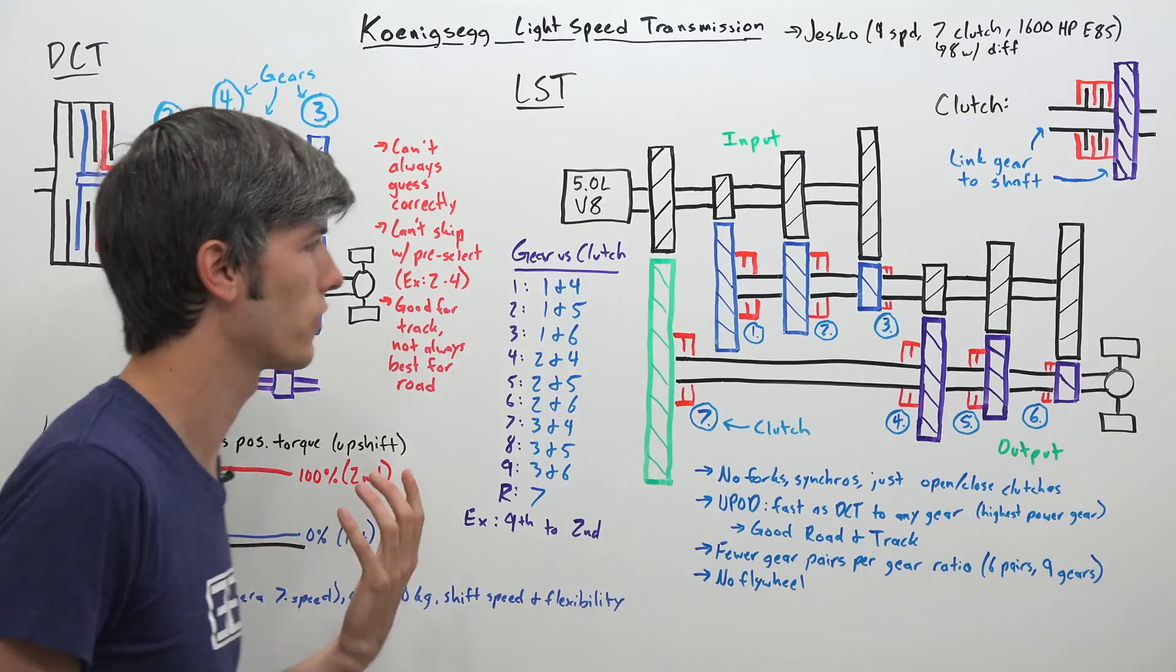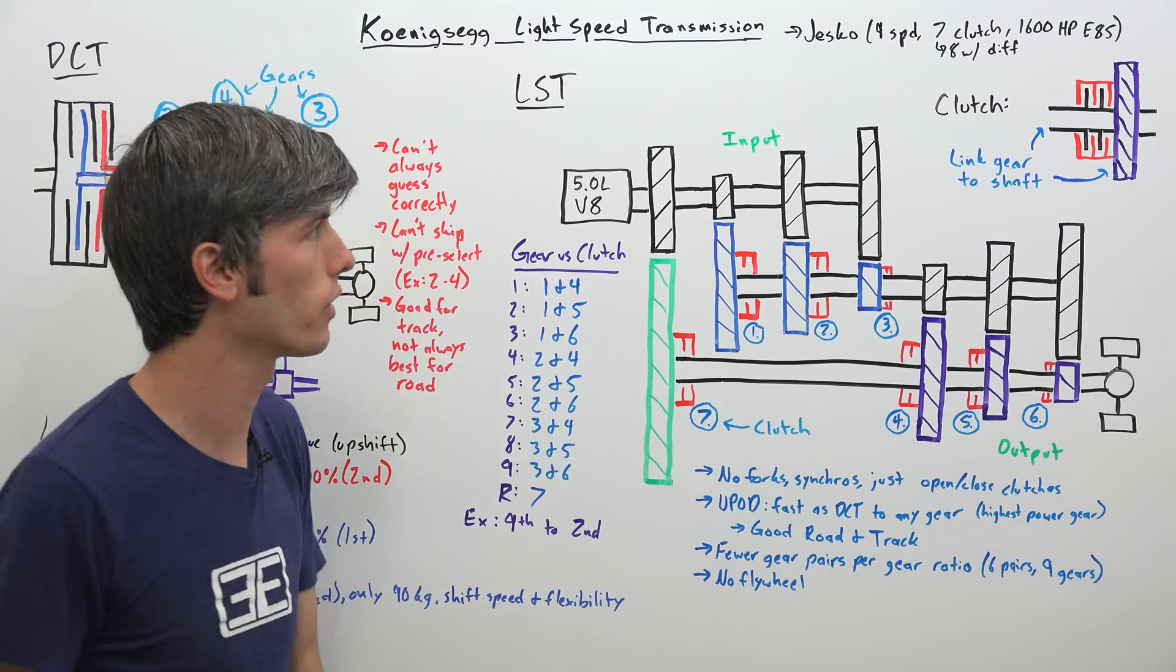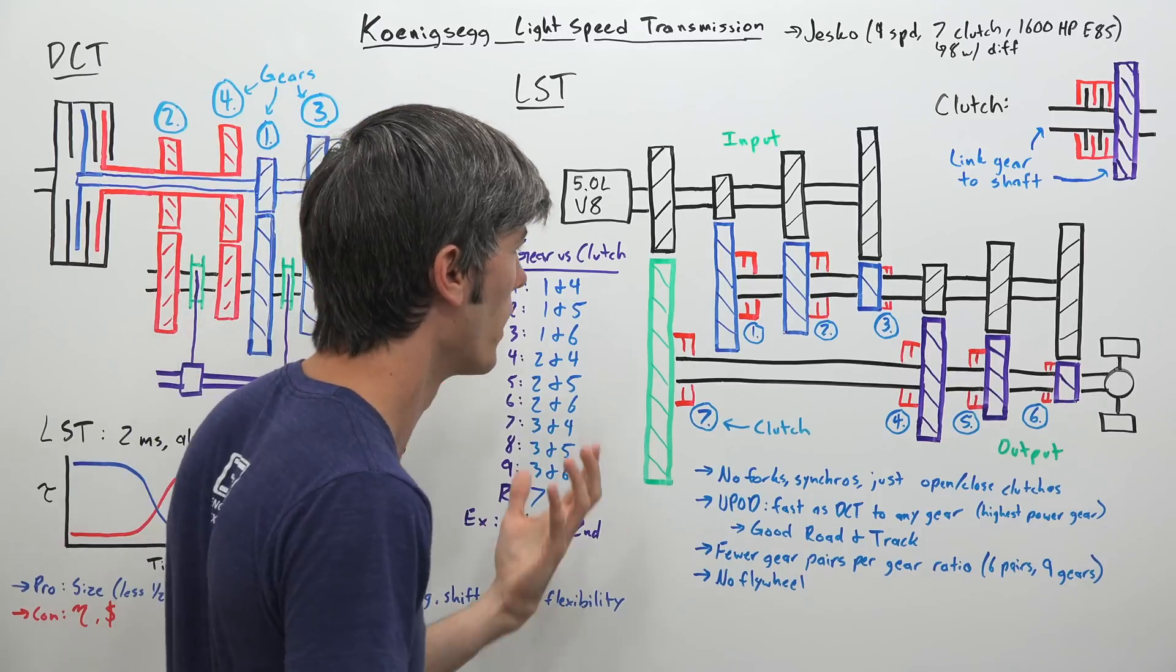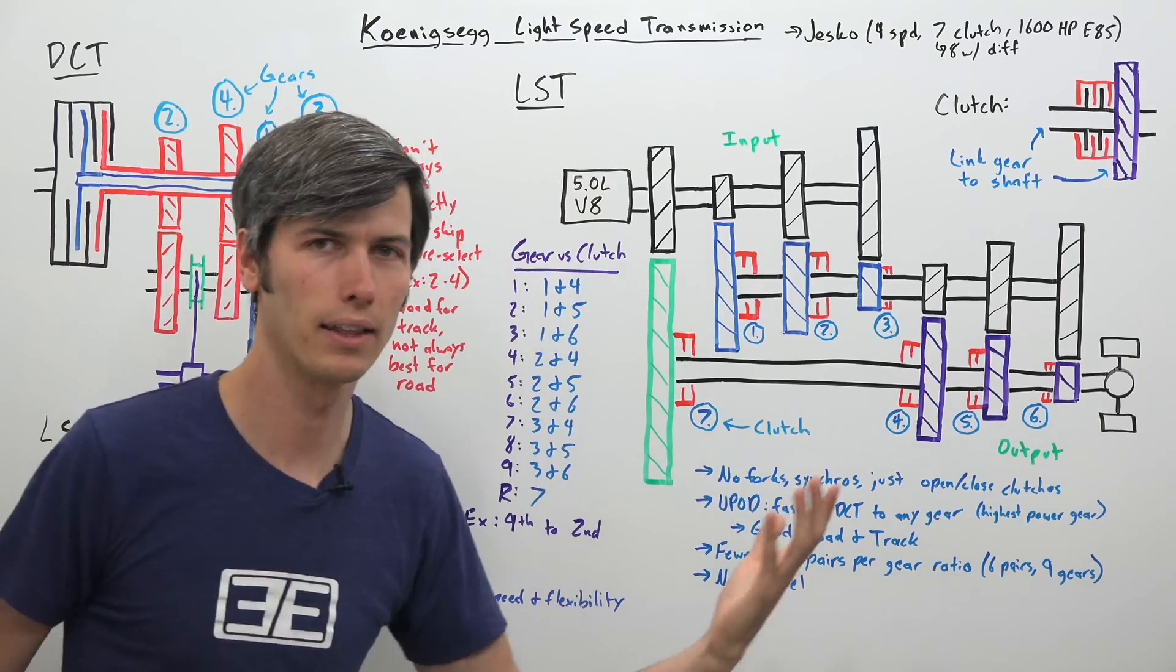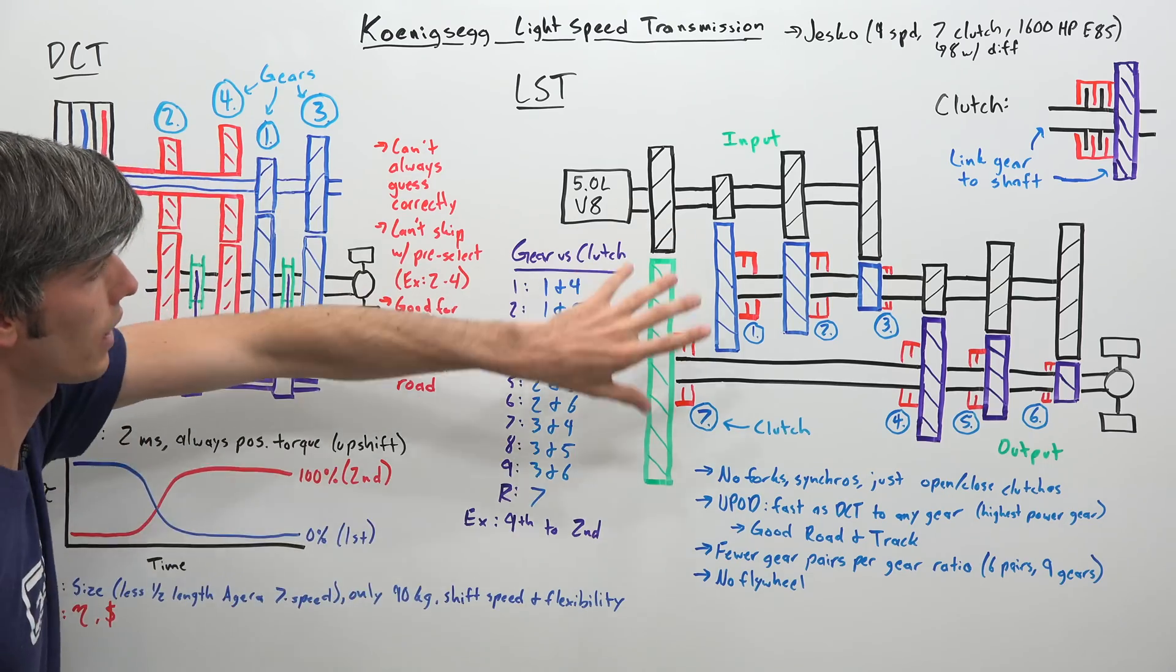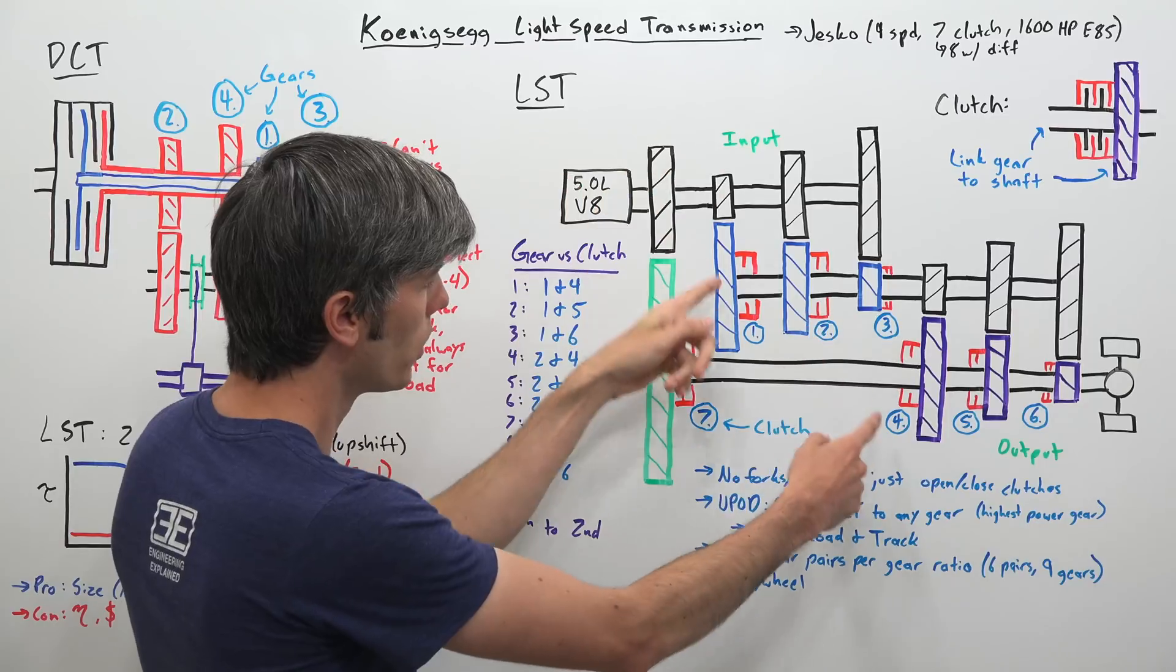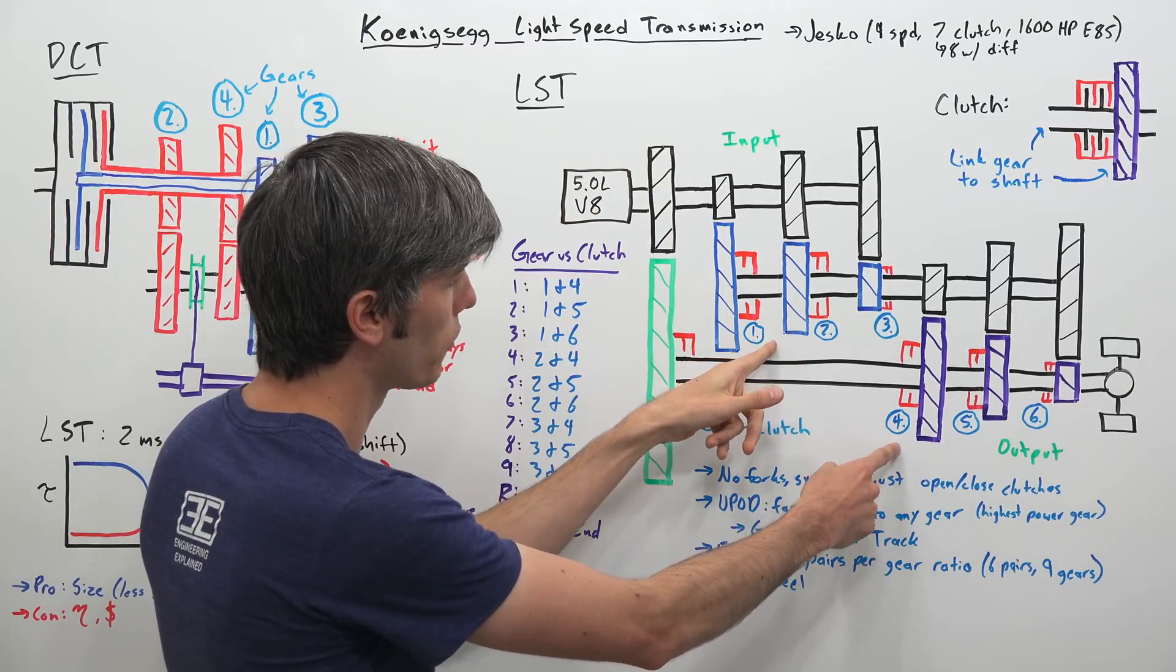Now, what might be the disadvantages? Well, of course, this is a very low volume transmission. They're just building 125 Jescos. So as a result, cost, of course, is going to be high. But I think the people buying a Jesco probably know that. The other part, when I look at this, I think about is efficiency. Because let's say you're in first gear and you've got one and four open. Well, that means you've got these five or one and four closed.